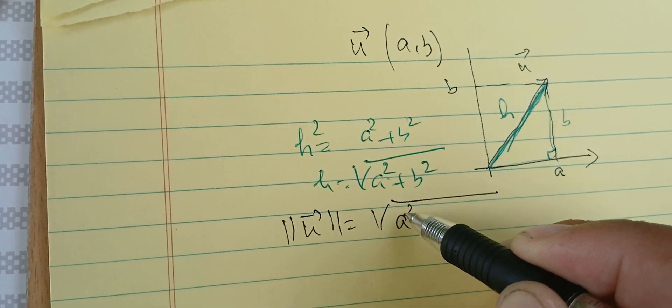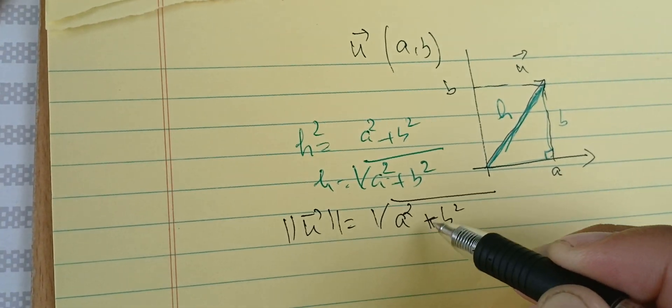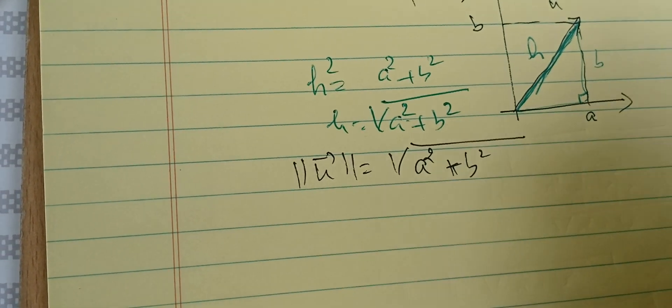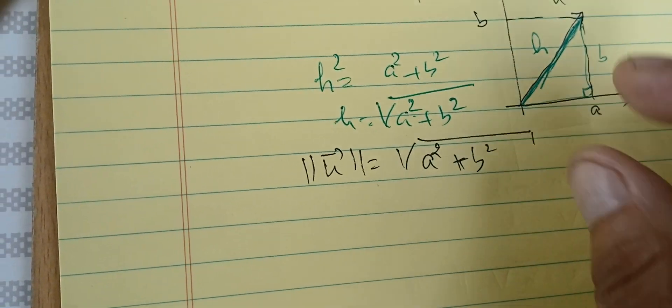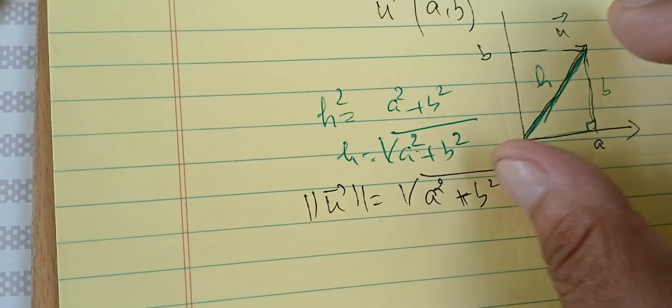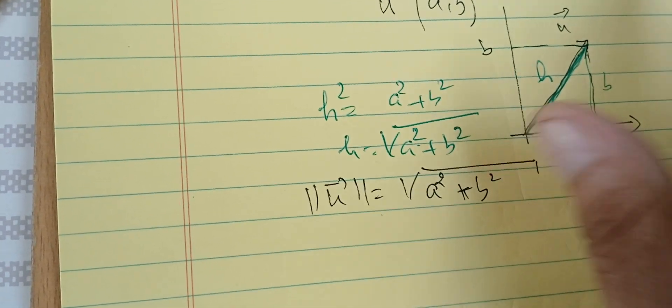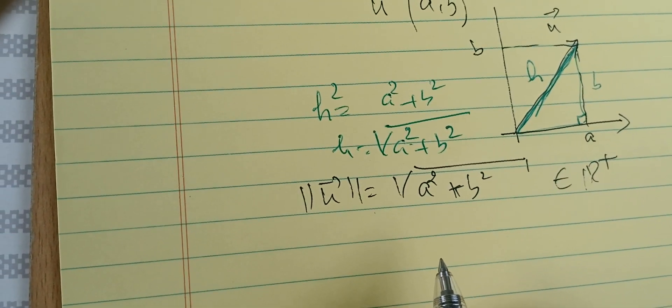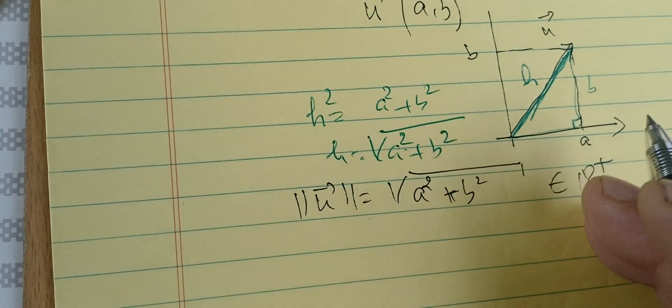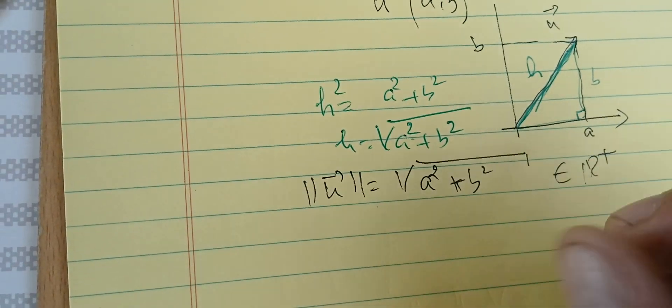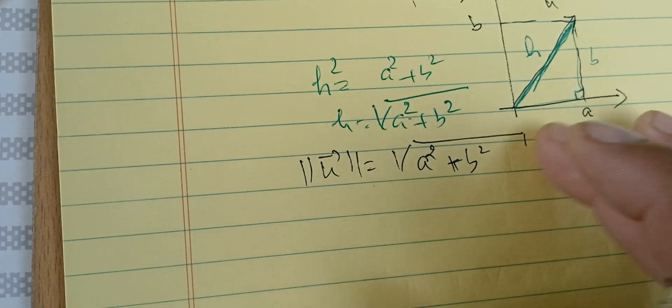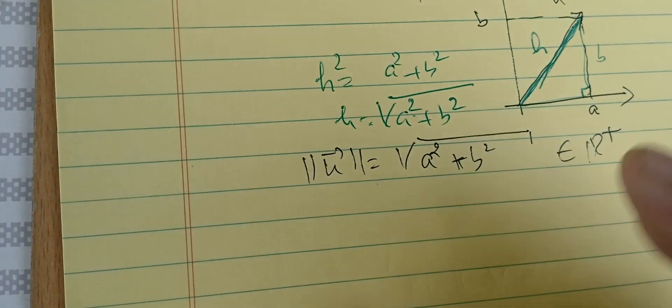Note that this is just a number. The length can be 1, 2, 3, 4, or 7—it's always a positive number or zero. It's a length, so it's always positive or zero.